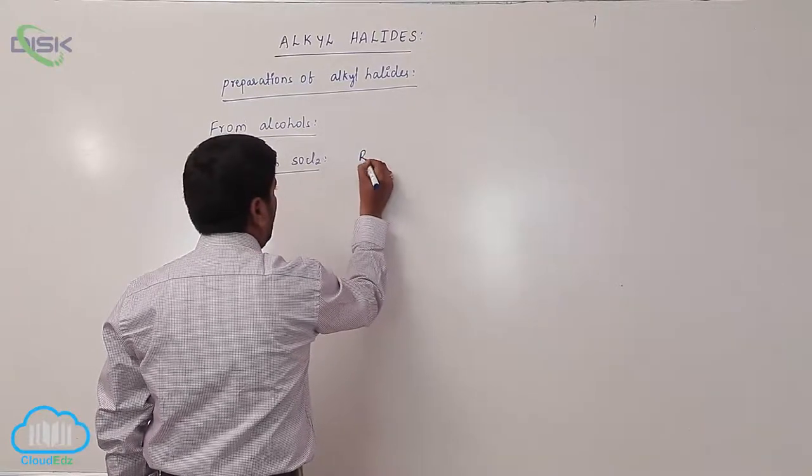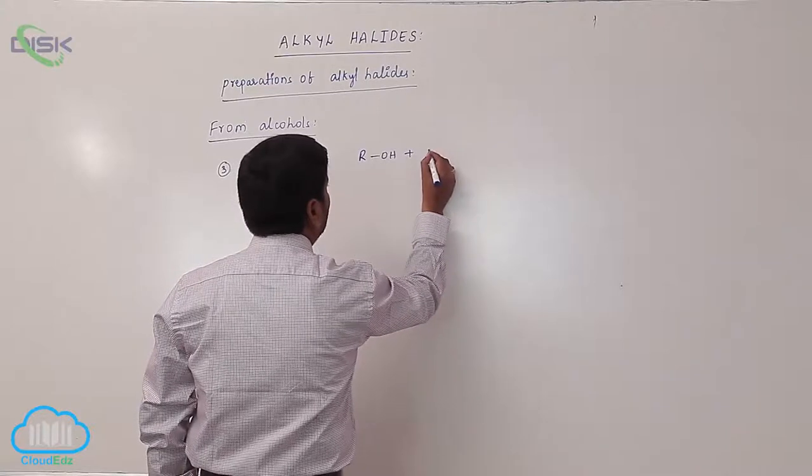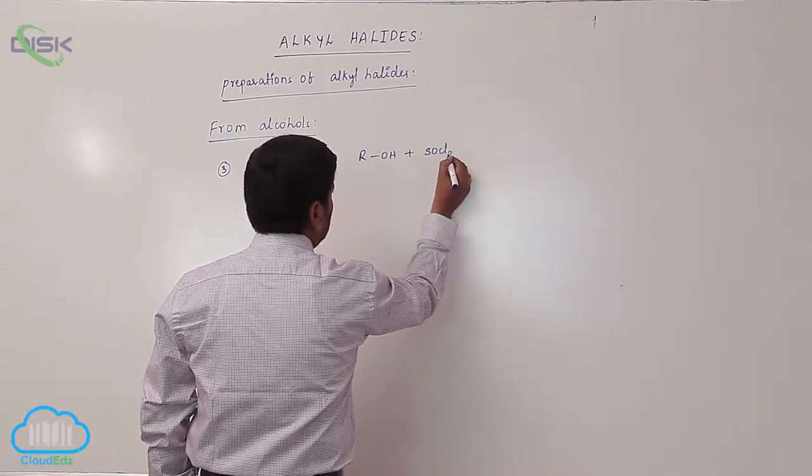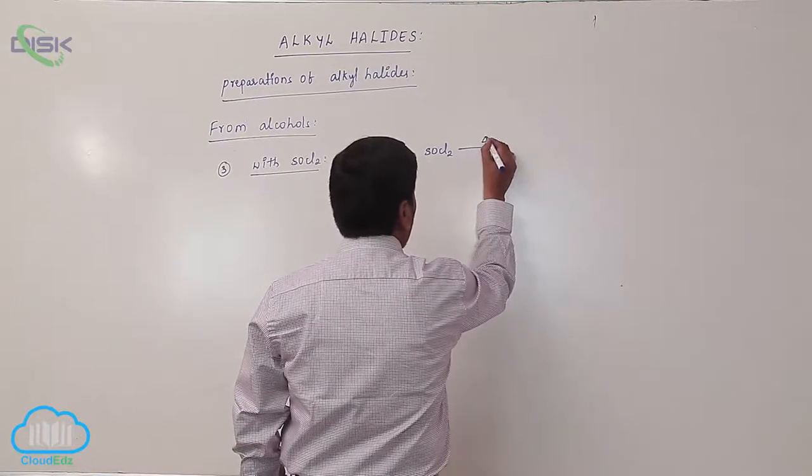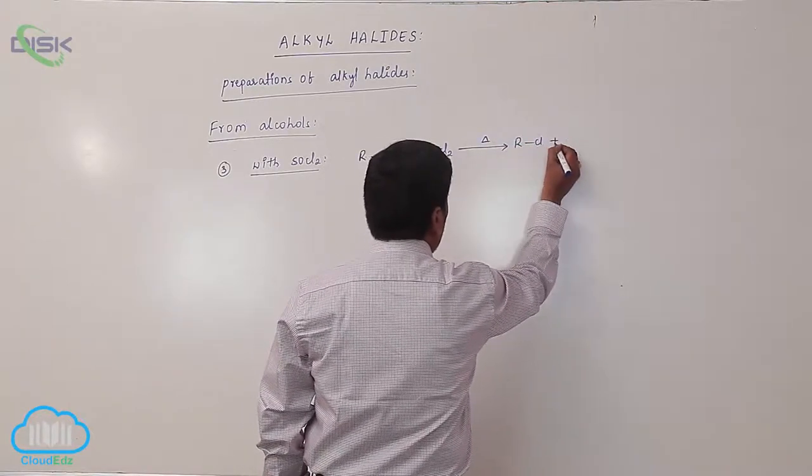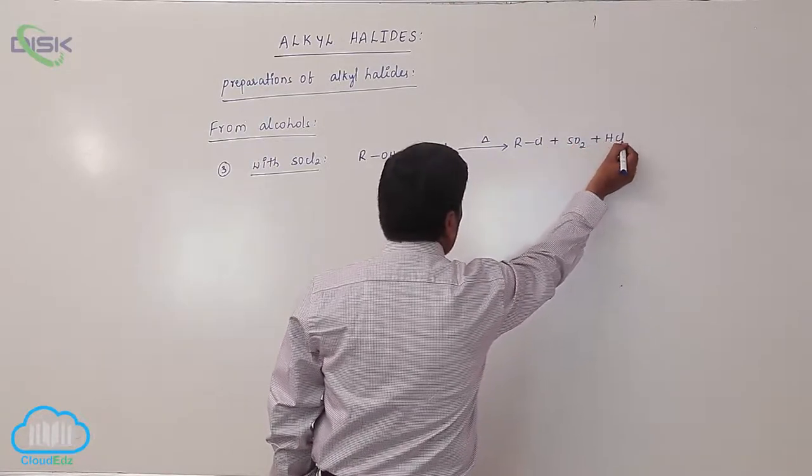An alcohol reacts with SOCl2, known as thionyl chloride, to form alkyl chloride, sulfur dioxide, and hydrochloric acid.